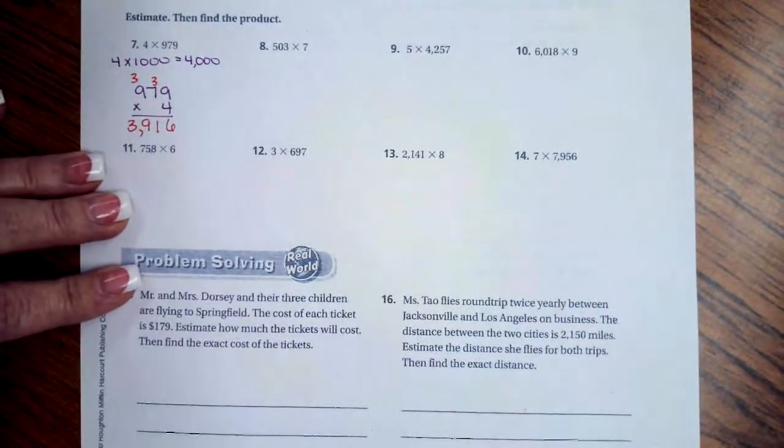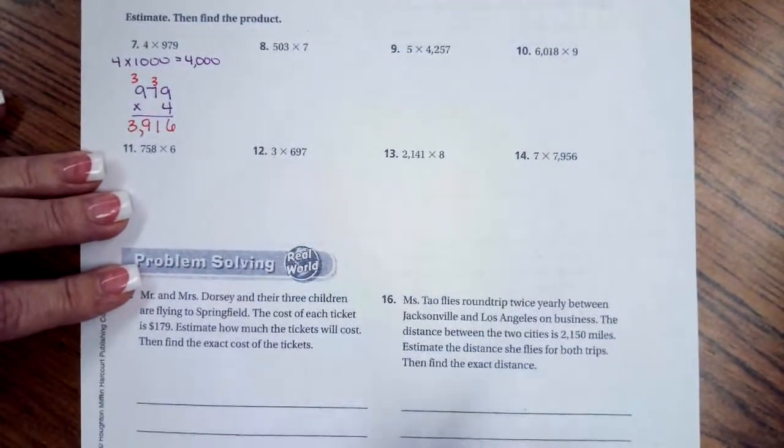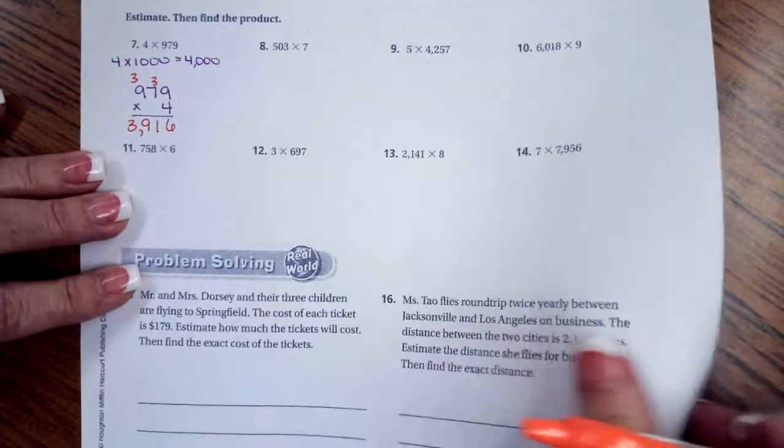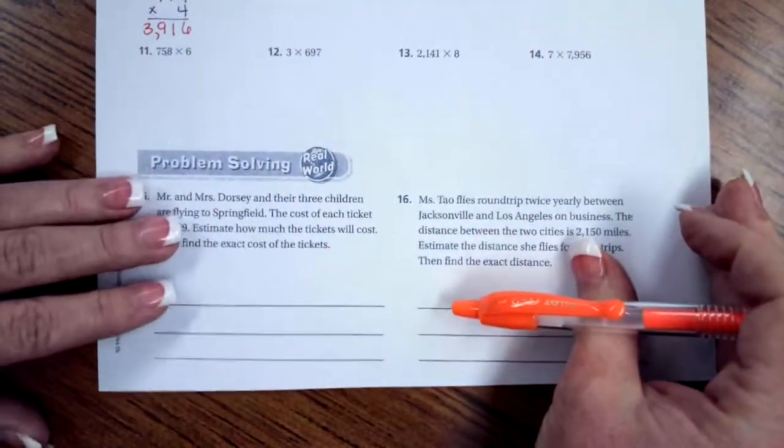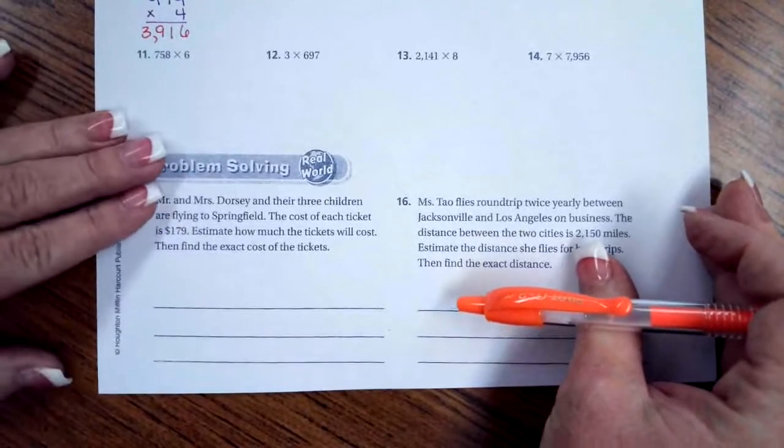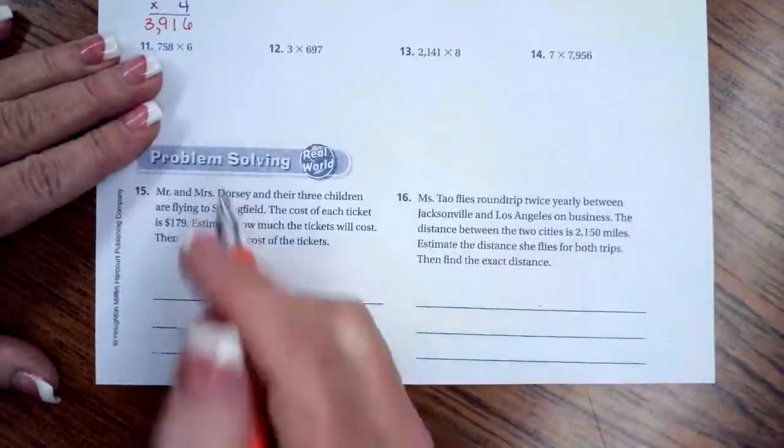You guys can go ahead and do those again all the way through number fourteen. Rounding is just an estimate, so don't panic over it. There's no perfect answer there.